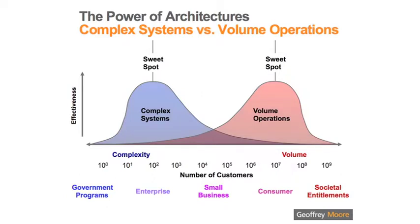Each one has a sweet spot, a place where they are most successful. But you can see from the diagram that you can stretch either model into the other's territory a bit. But when you do, they become less effective.